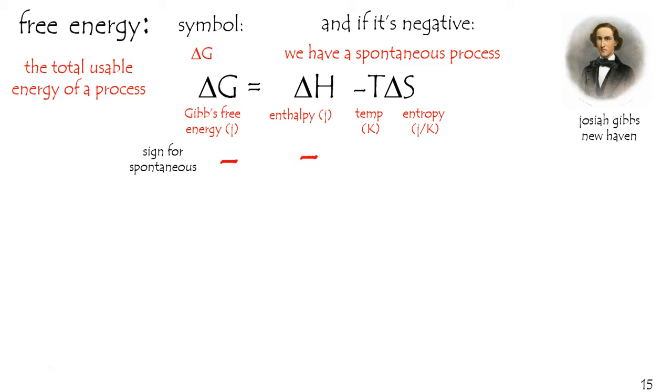And Kelvin temperature is by definition positive. Because of this negative sign, we can already, before we define the term, determine that when the entropy is positive, that will also favor a spontaneous process.